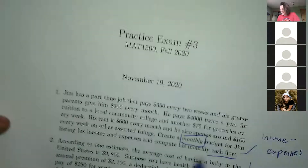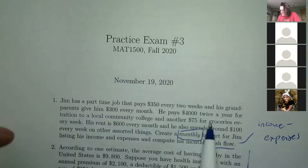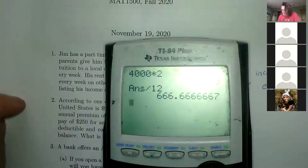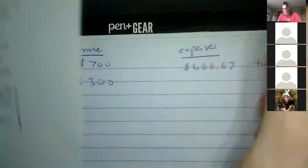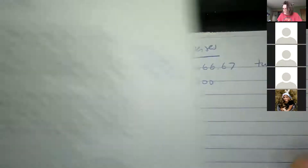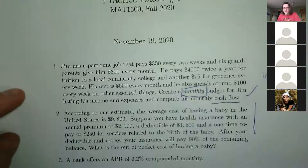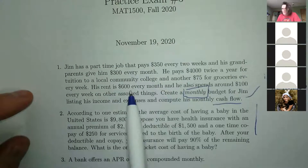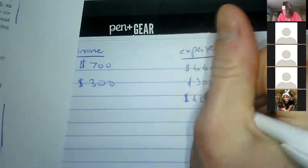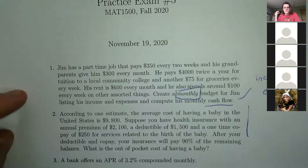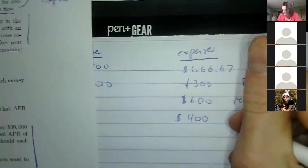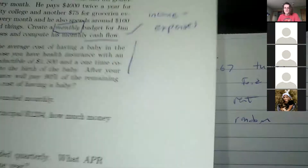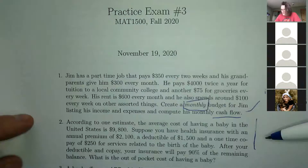Groceries are $75 every week, and since we want monthly figures, that's 75 times 4 equals $300 per month. Rent is $600 every month — already in monthly terms. There's also $100 every week for miscellaneous things like gas, which is $400 per month.